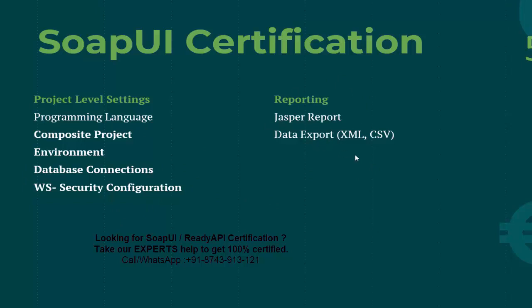Now I'll cover reporting options. Reporting is very important and available in the SOAP UI Pro version only — meaning Ready API only. When going for Ready API certification you will get questions about reporting. The most important question is: which engine is used inside Ready API for generating reports? The answer is the JasperReports engine. So if asked which reporting engine is used in Ready API, you can easily select JasperReports, because Ready API uses the JasperReports engine for generating reports.